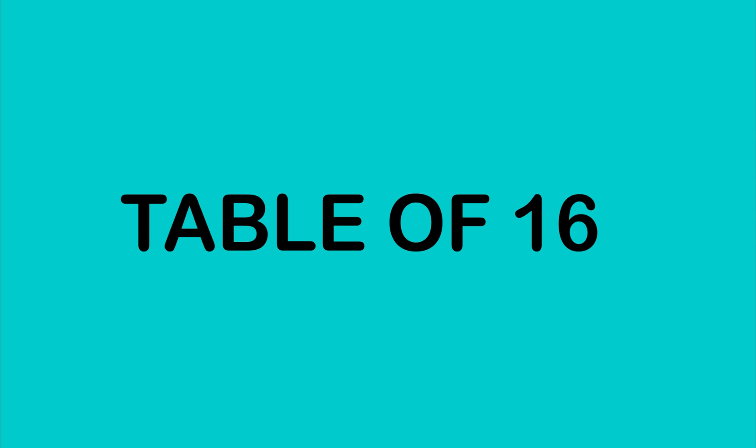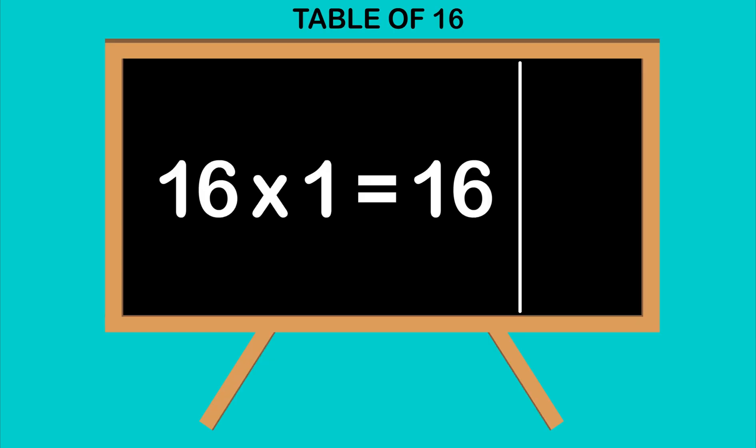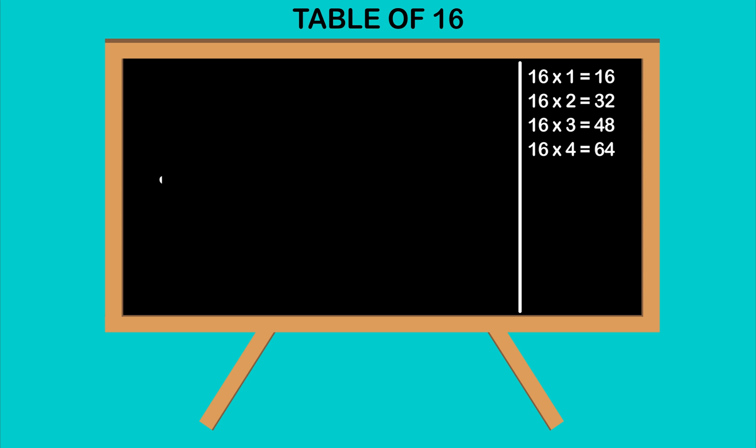Table of 16: 16 ones are 16, 16 twos are 32, 16 threes are 48, 16 fours are 64.